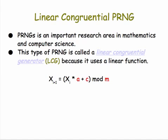This type of PRNG that we're playing with is known as a linear congruential generator, an LCG, because it uses a linear function. PRNG is an active and important area of research in mathematics and computer science. The goal of the research is to find values for A, C, and M — the multiplier, the number we add to the result, and the modulus.